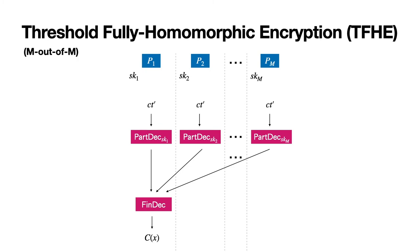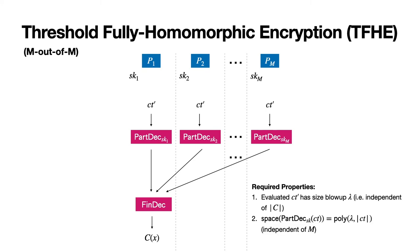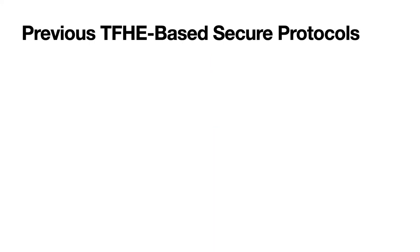We require the TFHE scheme to satisfy some additional properties. First, the evaluated ciphertext has to have size independent of the circuit size. Second, the space required by the partial decryption algorithm must be independent of the number of parties. Finally, we assume that there is a master secret key which can decrypt any ciphertext non-interactively, and we require the secret key shares to be additive shares of this master key. TFHE has proven useful in building classical secure computation protocols, in particular ones with low round complexity.